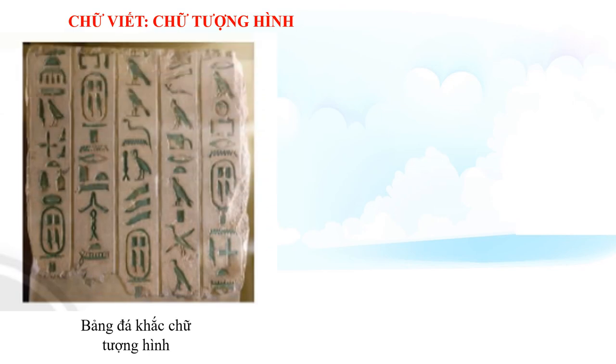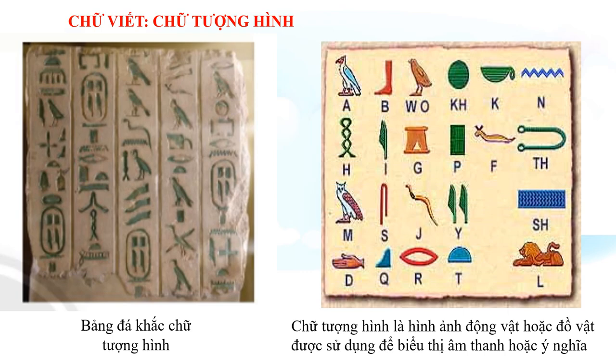Thành tựu văn hóa đầu tiên của người Ai Cập đó chính là về chữ viết. Người Ai Cập sử dụng chữ tượng hình. Chữ tượng hình là hình ảnh động vật hoặc đồ vật được sử dụng để biểu thị âm thanh hoặc ý nghĩa. Chúng tương tự như các chữ cái, nhưng một chữ tượng hình duy nhất có thể biểu thị một âm tiết hoặc là một khái niệm.